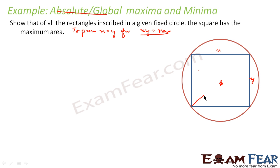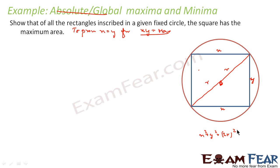To prove x equals y, I am trying to get a relation between x and y so that I can write the whole thing in terms of x. If you join the diagonal of the rectangle through the center, the diagonal equals 2r. So by Pythagoras theorem: x² + y² = (2r)², which gives y = √(4r² - x²).